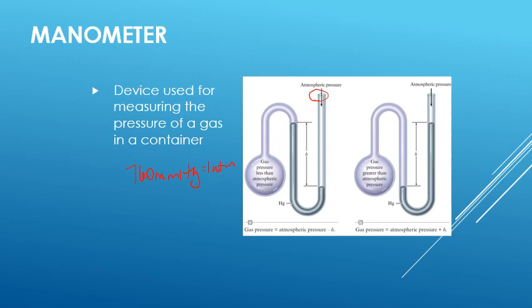If we have a situation like in the second diagram where now the atmospheric pressure side is higher, that means the gas inside the cylinder is exerting a greater force than the outside atmospheric pressure. So we could take the atmospheric pressure and simply add the height to give us the pressure inside the chamber.